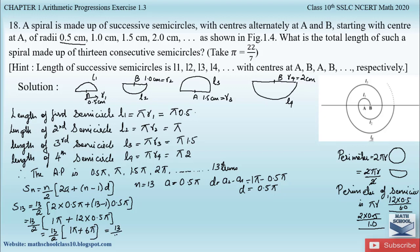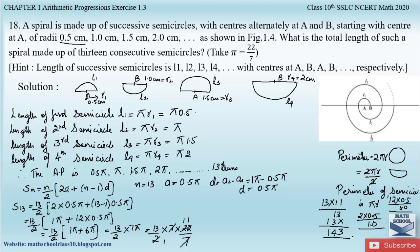Using the given hint that π = 22/7, we substitute: 13/2 × 7 × 22/7. The 7s cancel, giving 13/2 × 22 = 13 × 11 = 143. Therefore the sum of the lengths of 13 consecutive semicircles is 143 centimeters.